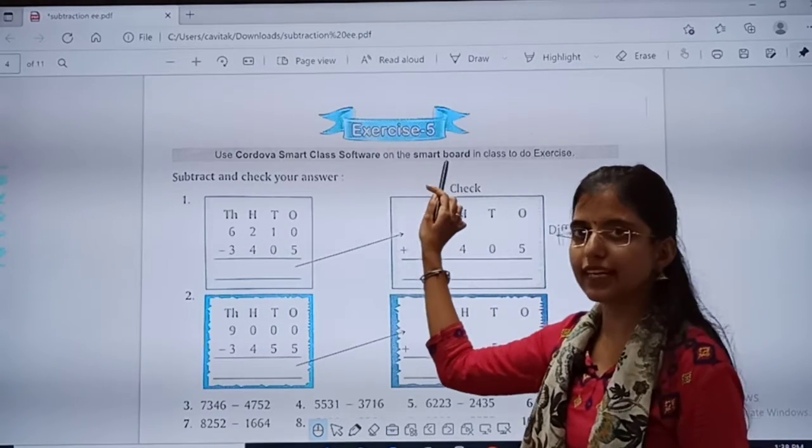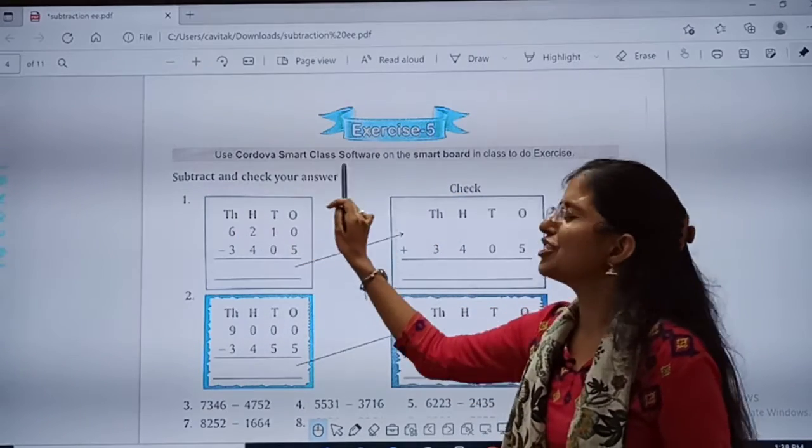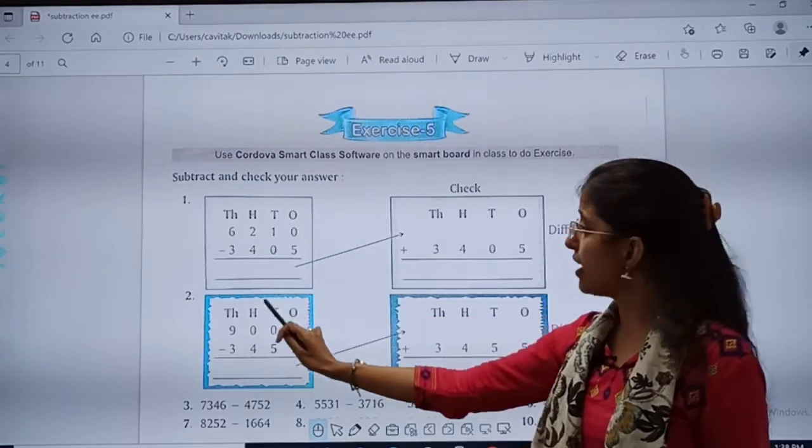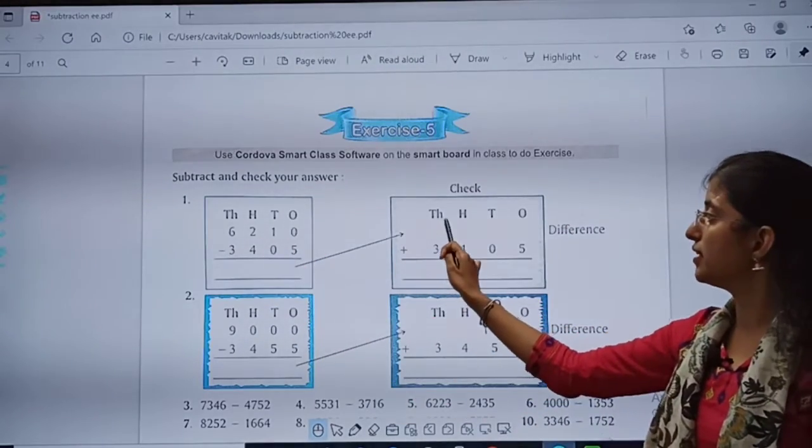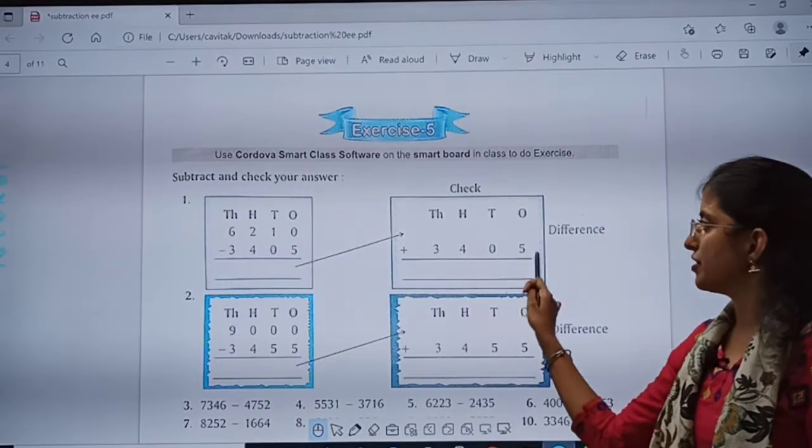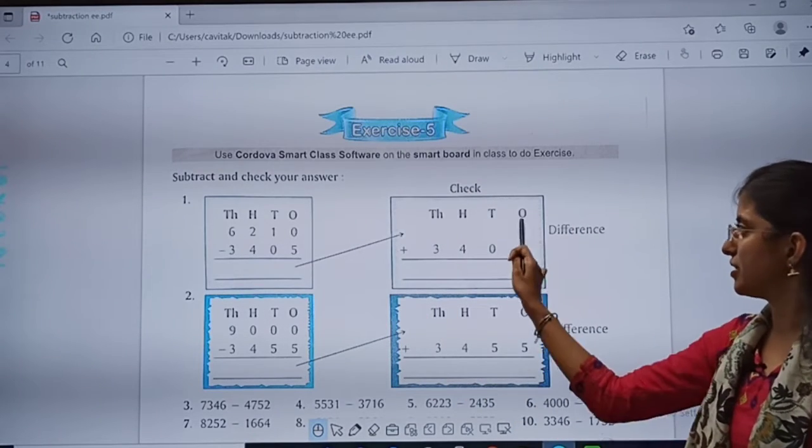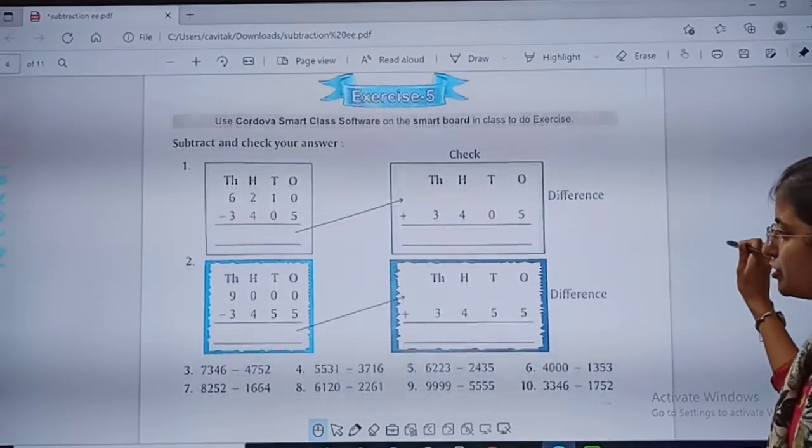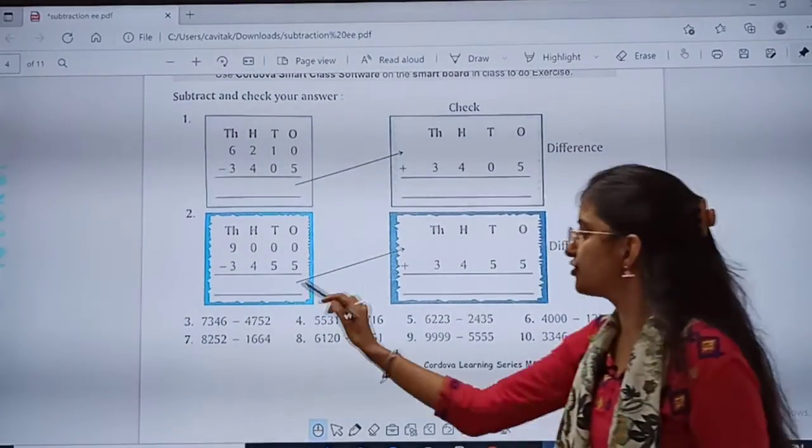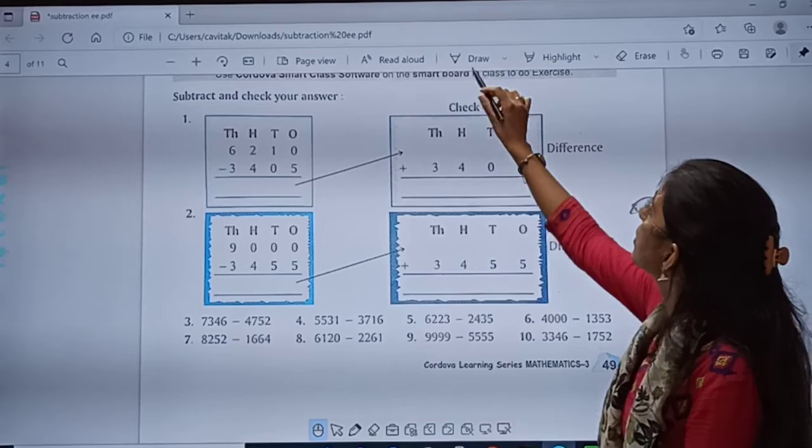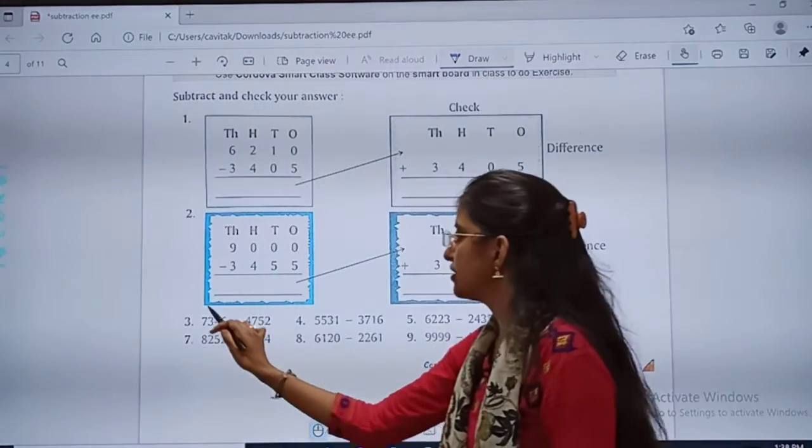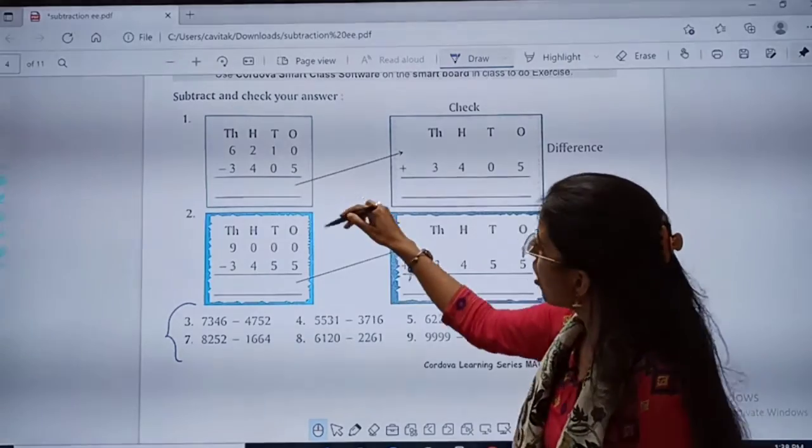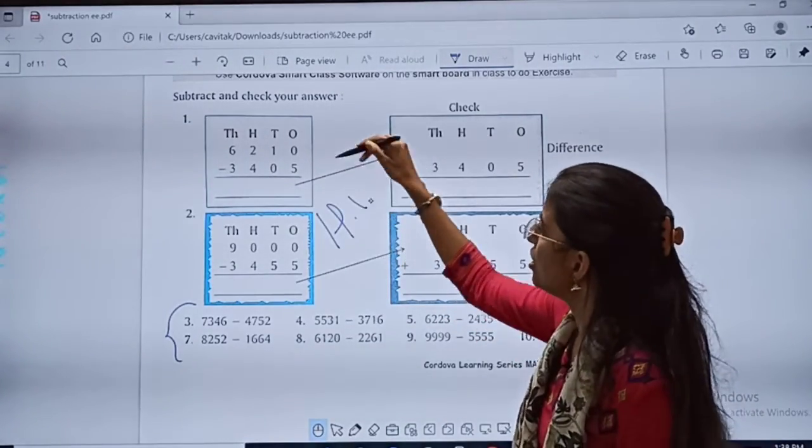Here it is. See, Exercise 5: Subtract and check your answer. See, first, you have minused. Then, you will write the difference here. And the number is given here. See, difference you will write here. Then, check your answer. And similarly, you will solve these questions also. See, this also you will solve. So, Exercise 5 is your homework for today. Okay.